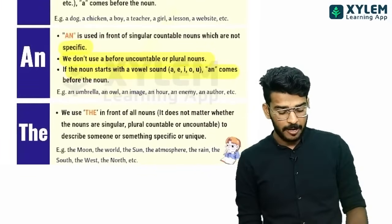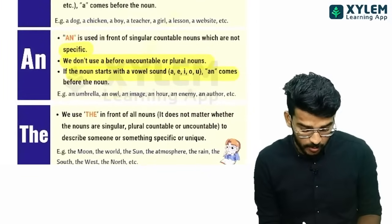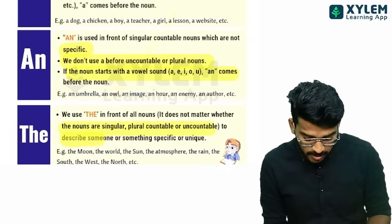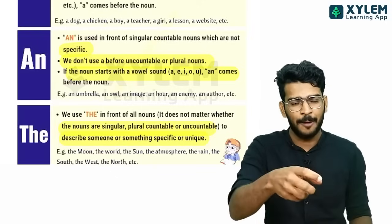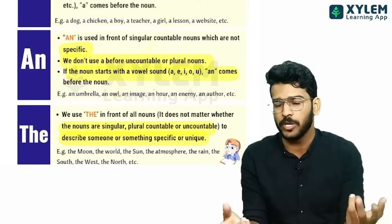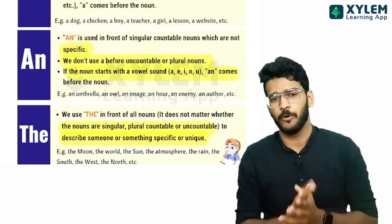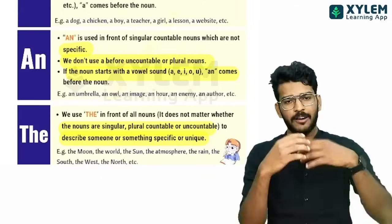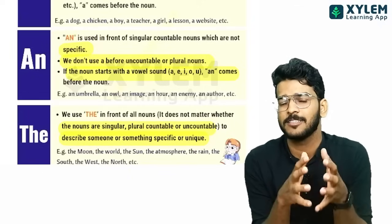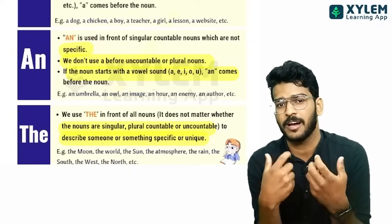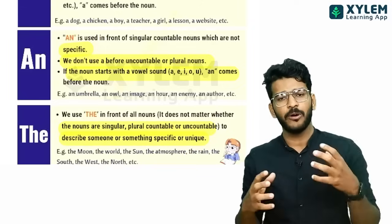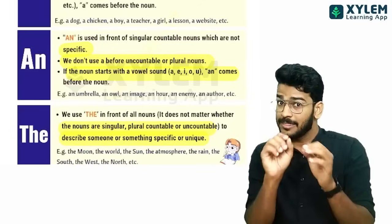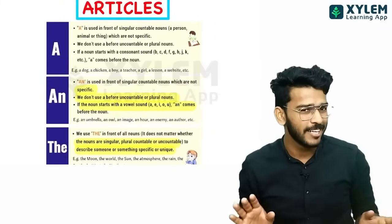It does not matter whether the nouns are singular or plural or countable — 'the' is used to describe someone or something specific or unique. So he is the guy — that specific guy. He is the guy who comes. He knows he's the guy.